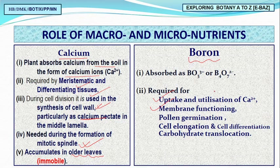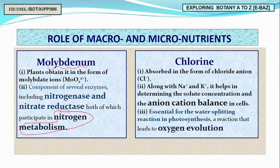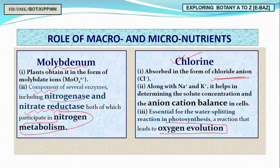Boron is required for the uptake and utilization of calcium, for membrane functioning, pollen germination, cell elongation, cell differentiation, and carbohydrate translocation. Molybdenum plays a very important role in nitrogen metabolism and is a component of two key enzymes: nitrogenase and nitrate reductase.